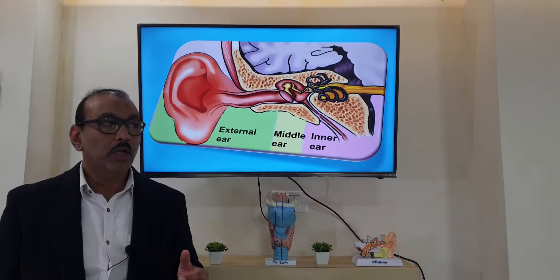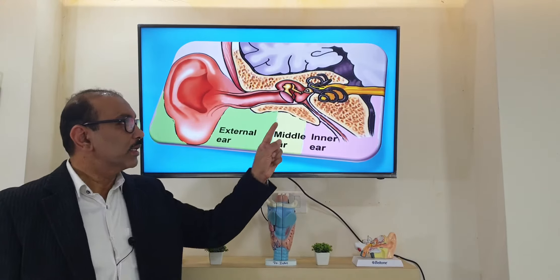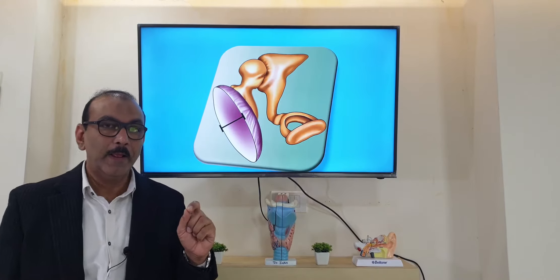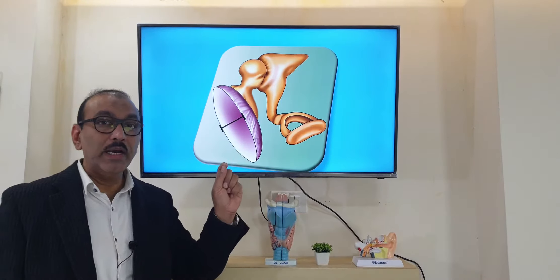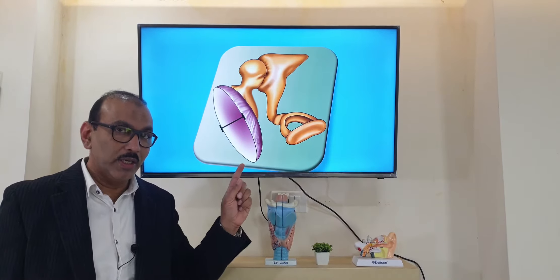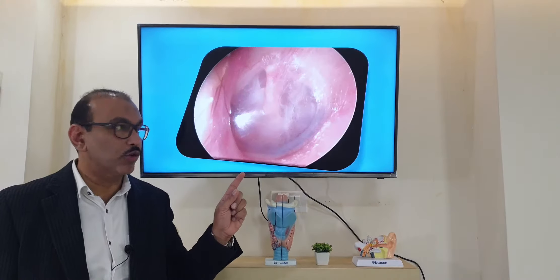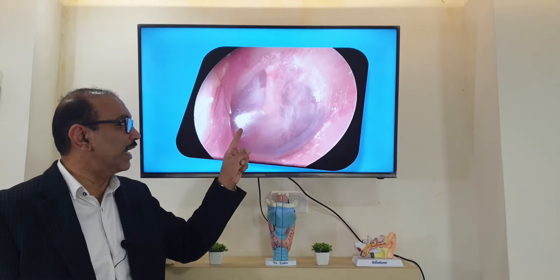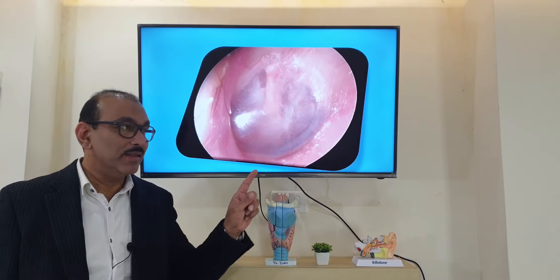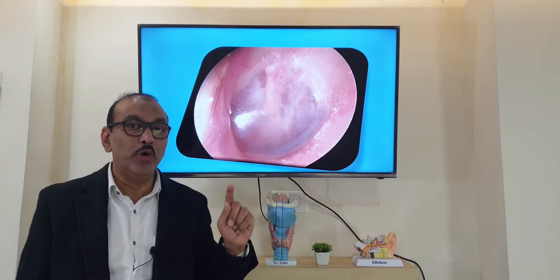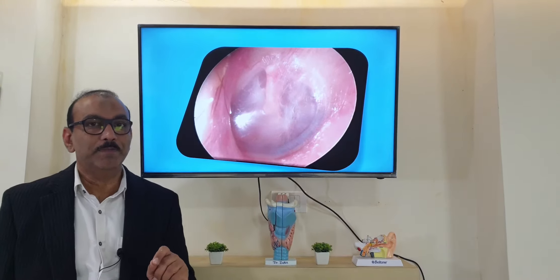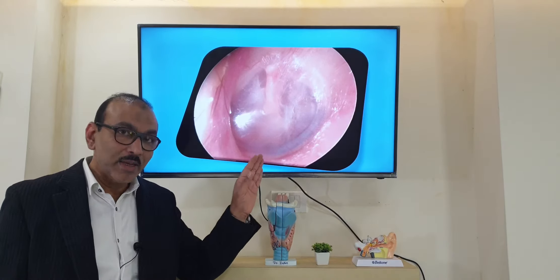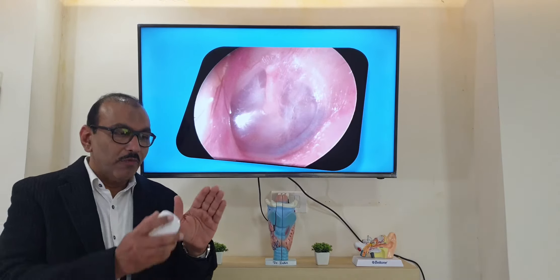Let us first see the structure of the eardrum, also called the tympanic membrane. The eardrum is pearly in color and translucent — if you shine a light you can see it reflect. This is a diagram, and now I will show the real photograph. This is how a normal tympanic membrane looks like.